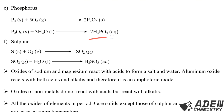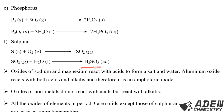When phosphorus 5 oxide is dissolved in water we get phosphoric 5 acid. Next we have sulfur: sulfur reacts with oxygen giving us sulfur dioxide gas, and when sulfur dioxide gas is dissolved in water we get sulfuric 4 acid. Learners, when non-metals like sulfur and phosphorus react with oxygen we get non-metal oxides, and when non-metal oxides dissolve in water we get an acidic solution.